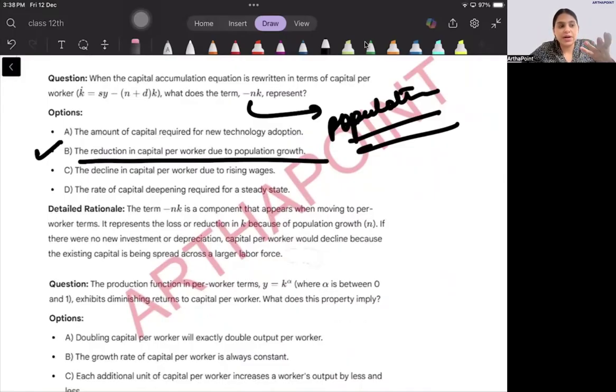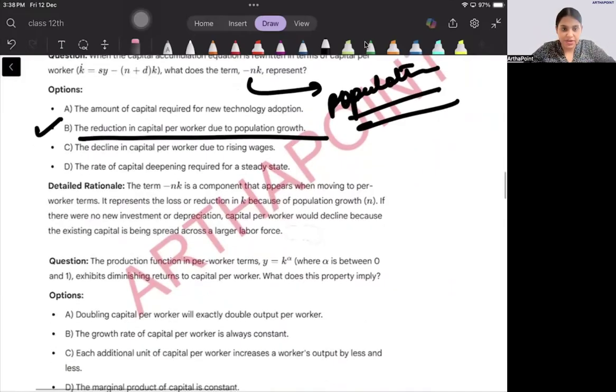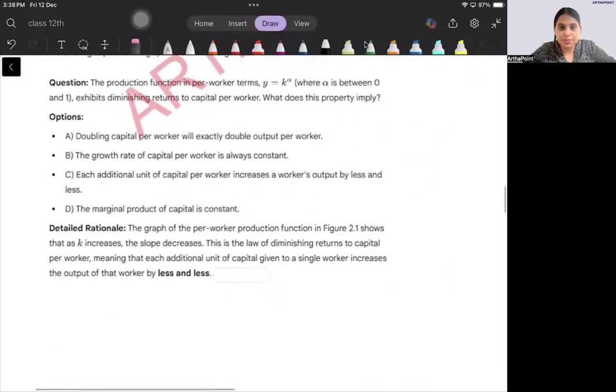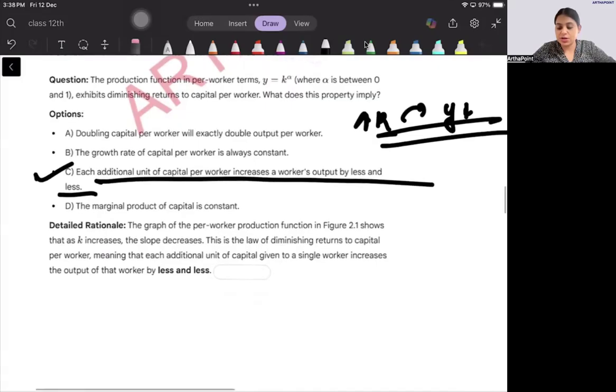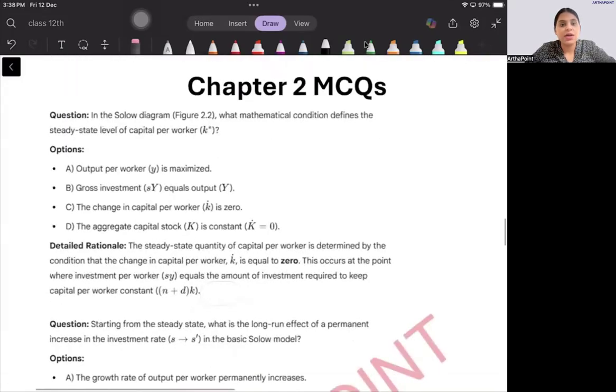Next, the production function in per worker terms exhibits diminishing returns to capital per worker. What does this property imply? It means that as you increase capital, output increases by less and less amount. So the answer will be C: each additional unit of capital per worker increases worker's output by less and less amount.